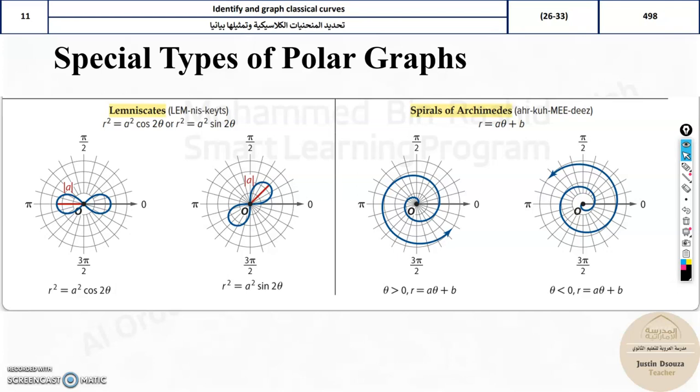Lemniscate. Lemniscates are very unique and easy to recognize. Why? Because look at the standard form. It is R squared equals A squared cos 2 theta. If they give you a problem with R squared, you know it's lemniscate. Just that, if it is cos theta, it will be along x-axis. Sine theta will be along y-axis.